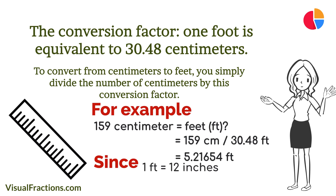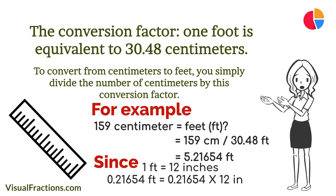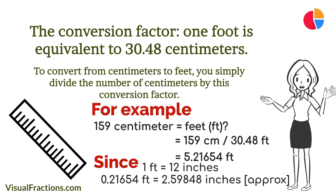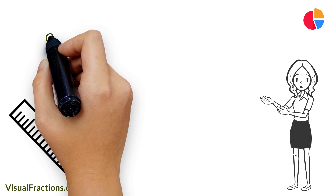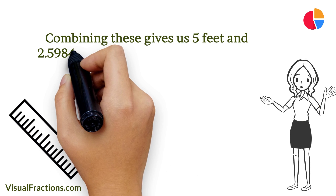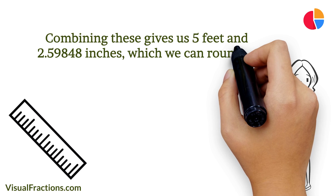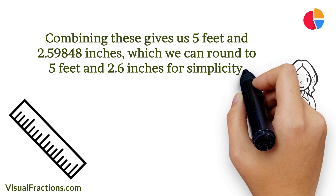Since one foot contains 12 inches, we'll convert the fractional part into inches by multiplying it by 12. Thus, 0.21654 feet is approximately 2.59848 inches. Combining these gives us 5 feet and 2.59848 inches, which we can round to 5 feet and 2.6 inches for simplicity.